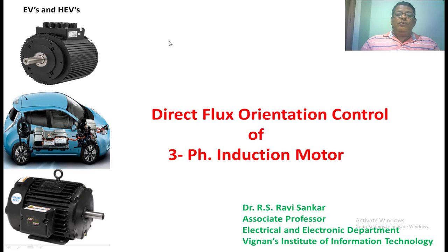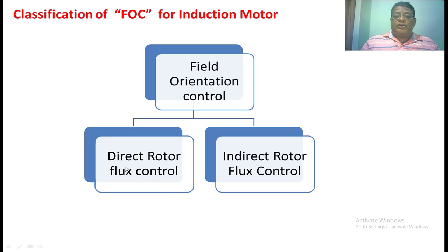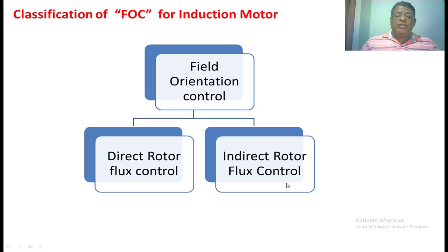The field orientation control of induction motor is broadly classified into two types. One is direct rotor flux control and the second one is indirect rotor flux control. In direct rotor flux control, we are controlling the rotor flux directly. In indirect rotor flux control, we are not measuring the rotor flux directly — we are estimating the rotor flux from the stator voltage and the stator current by means of an observer, and from that value we control the torque and speed developed in the induction motor.